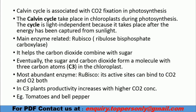Let's start with the Calvin Cycle. It is associated with CO2 fixation in photosynthesis. Calvin Cycle is also asked — which cycle is associated with CO2 fixation in photosynthesis? The answer is Calvin Cycle. It takes place in the chloroplast during photosynthesis. The cycle is light independent because it takes place after energy has been captured from sunlight. This is very important — which part of photosynthesis is light independent? Calvin Cycle is light independent.